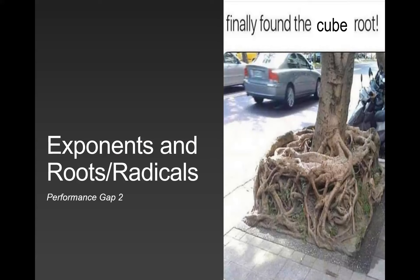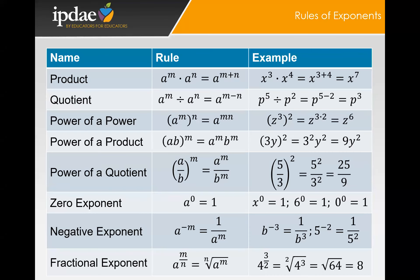Exponents and roots — otherwise known as radicals — is a performance gap that GED has found very problematic for students. I recommend teachers focus on the rules of exponents: multiplying exponential expressions, dividing exponential expressions, raising exponential expressions to a power, distributing a power to a product of two expressions, finding the quotient of something raised to a particular power, any number raised to a zero power, negative powers, and fractional exponents, which leads you to radical expressions.